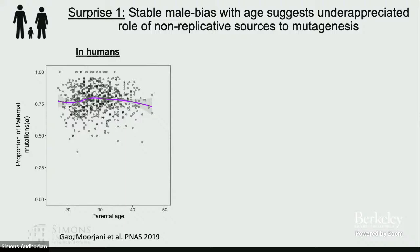With this data, we can also partition the male bias in mutation with age. Looking at pedigrees where parents are around 20 years of age and estimating the male bias, then comparing across increasing parental age, we find surprisingly a flat line. We expected this to increase linearly or even exponentially with age. Instead, the flat line suggests that more mutations may be occurring due to DNA damage at similar rates in males and females.